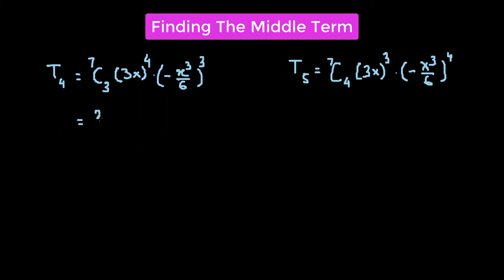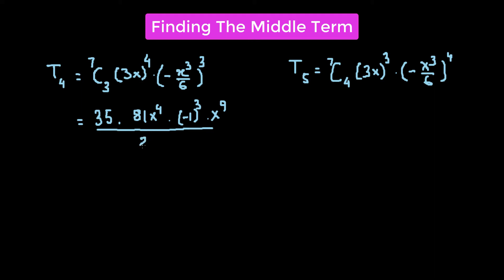For T4: 7C3 is 35, times 3⁴ which is 81, times x⁴, times (−1)³, times x³, divided by 6³ which is 216. Doing the final calculation, 35 × 81 ÷ 216 gives us 105/8. Since (−1)³ is negative, we put that in front, and the x exponents add: 4 + 9 = 13. So T4 = −(105/8)x¹³.